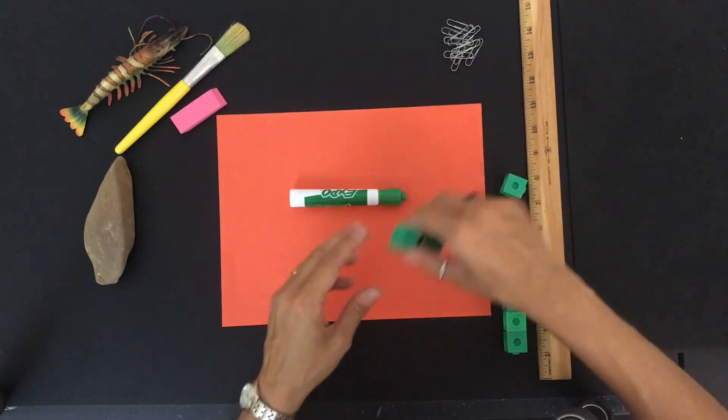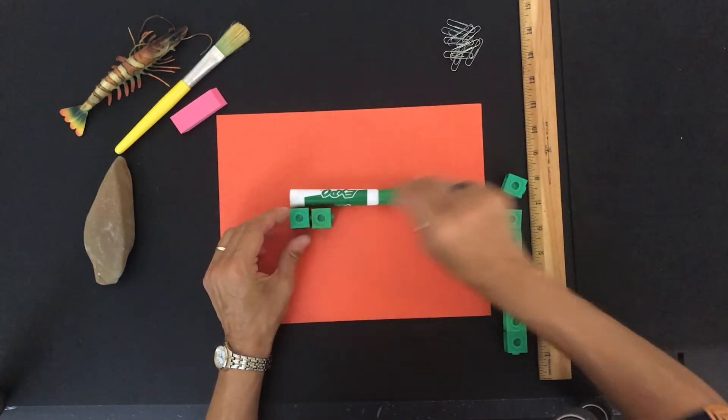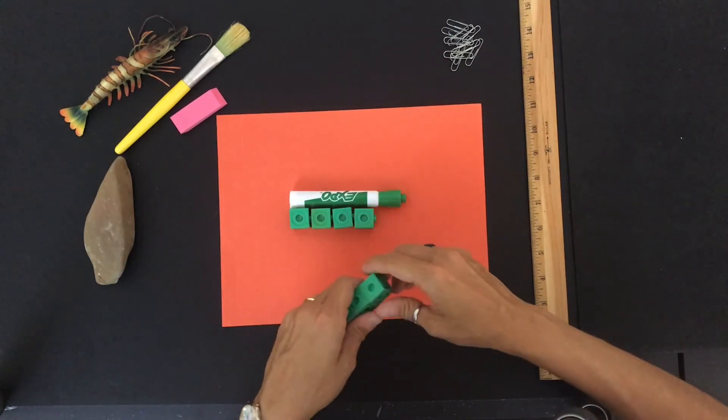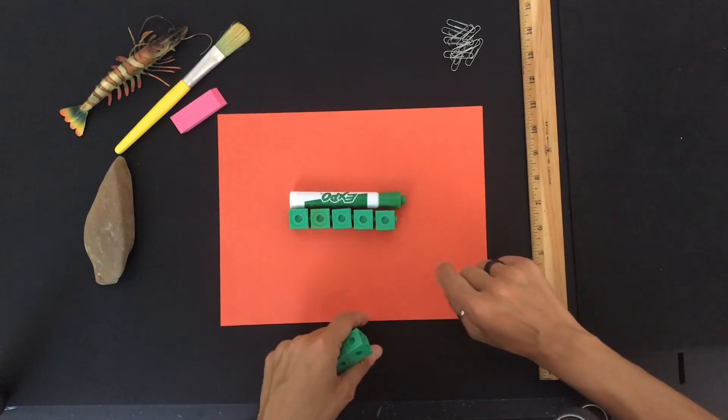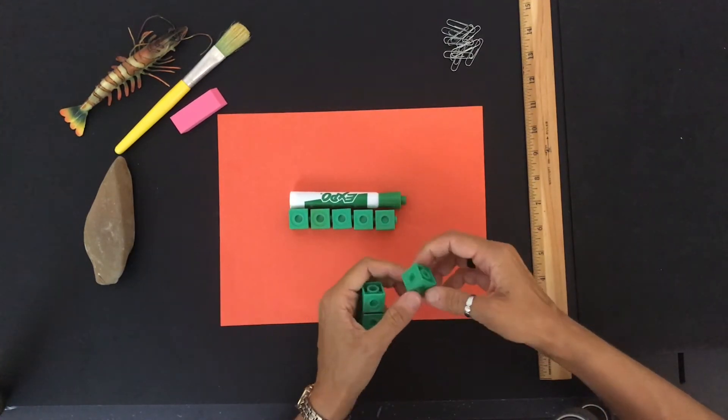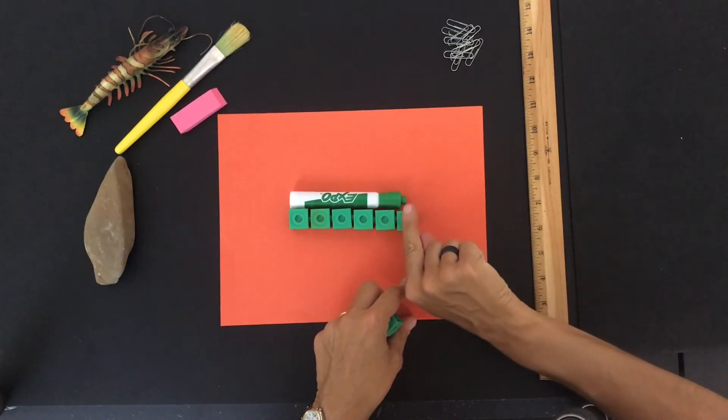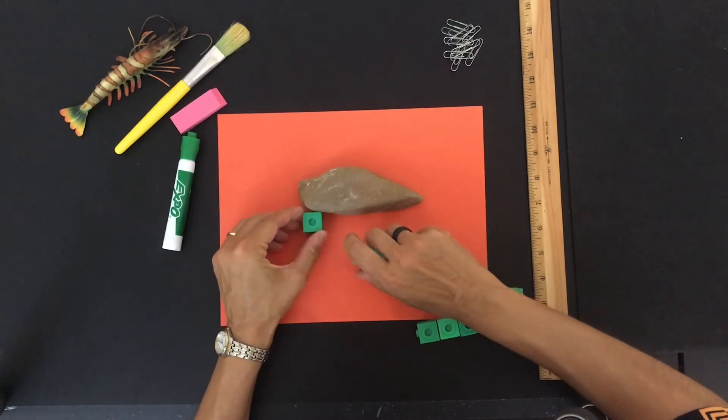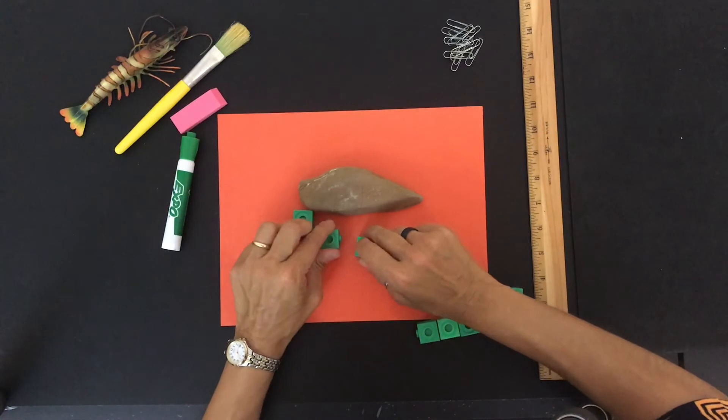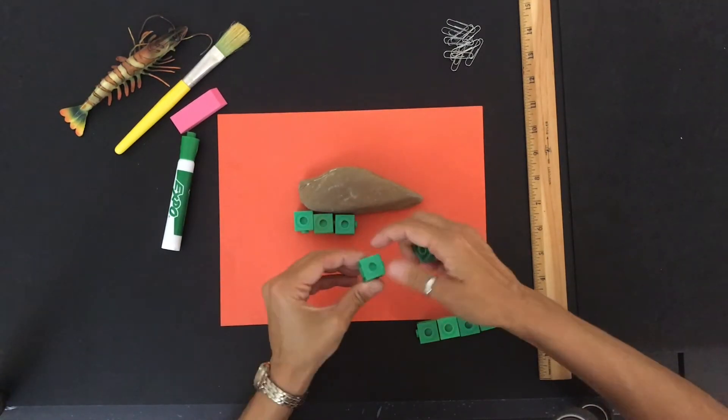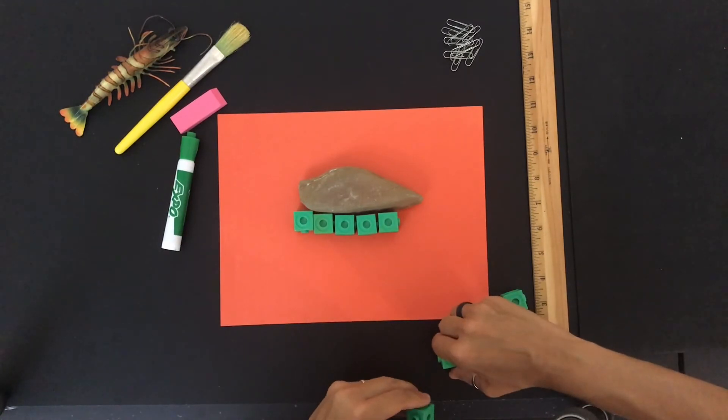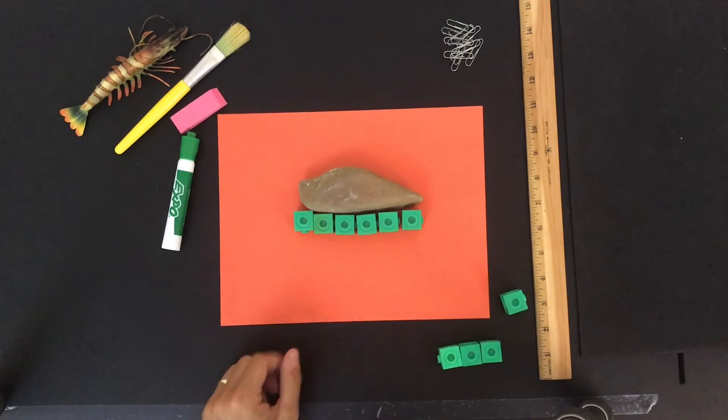Let's try the marker. And this time I'm going to use Unifix cubes. So one, two, three, four, five. And there's still a little hanging out. Probably about five and a half. Yeah. About half of that one. So five and a half. And now let's use Unifix cubes to measure the rock. One, two, three, four, five. How many do you think it's going to be? If you said six, you would be correct. Six Unifix cubes.